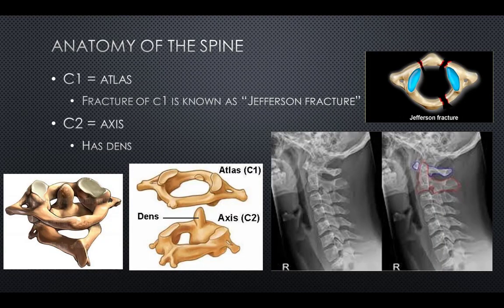The first two vertebrae are a little different than the others. C1 is known as the atlas. C2 is known as the axis and has the dens, a small projection which goes up inside of the body of C1.